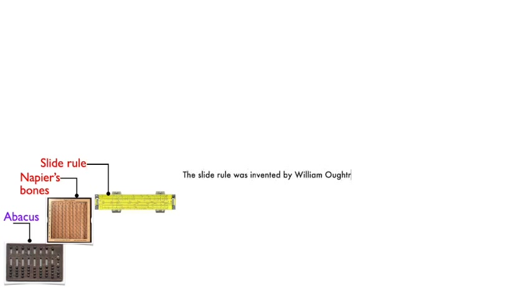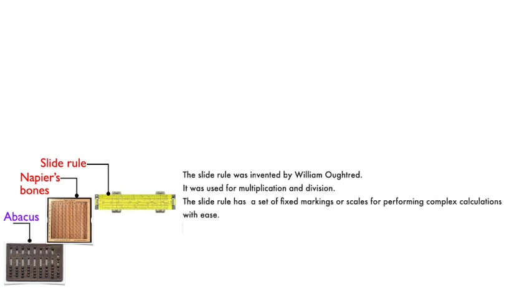The slide rule was invented by William Oughtred. It was used for multiplication and division. The slide rule has a set of fixed markings or scales for performing complex calculations with ease. Before electronic calculators were developed, slide rules were used in the fields of science and engineering.